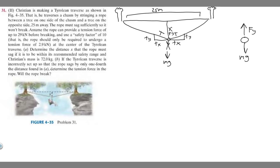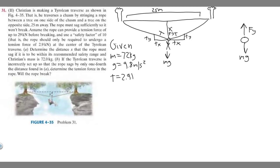Let's write down what we're given in terms of actual numbers. We're given the mass of the person, which is 72 kilograms. We also know gravity equals 9.8 meters per second squared. We also know T, the tension limit, is going to be 2.9 kilonewtons. That's essentially 2,900 newtons, since kilo means 1,000.